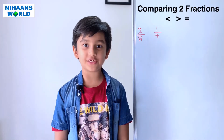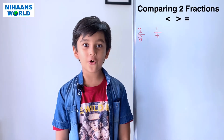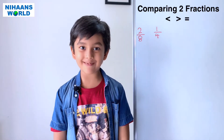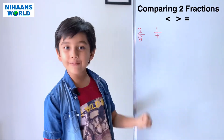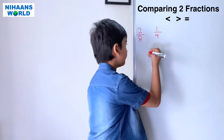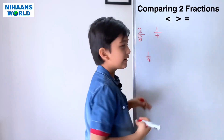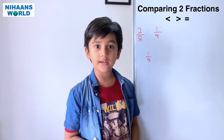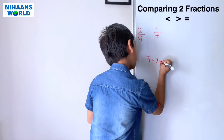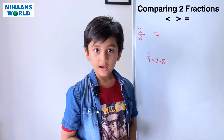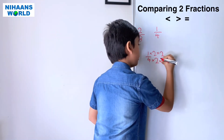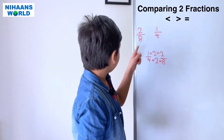Friends, let's solve fractions greater than, lesser than, or equal to examples. Let us see the example: 2 by 8 and 1 by 4. We have to make the denominators equal. Here is 1 by 4, so we multiply 4 by 2 to get 8. We also multiply 1 by 2 to get 2. So 1 by 4 becomes 2 by 8, and they are equal.